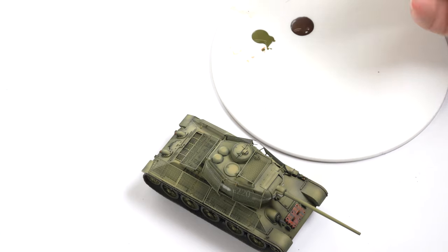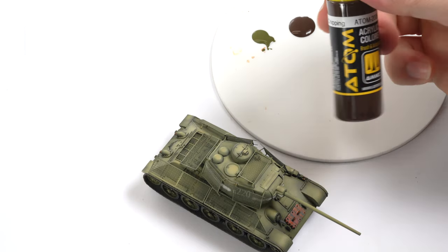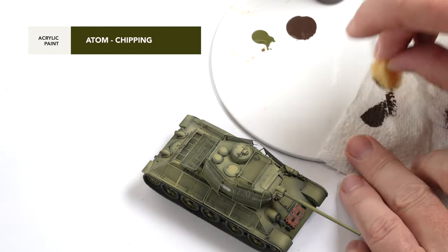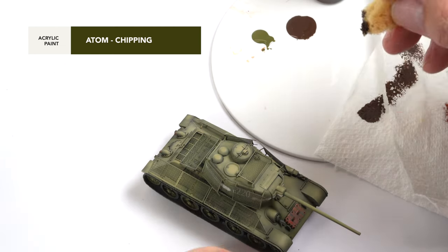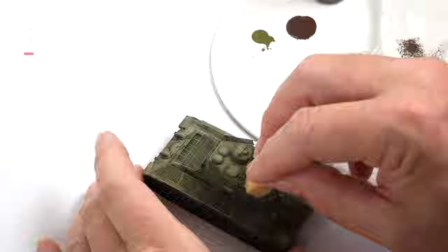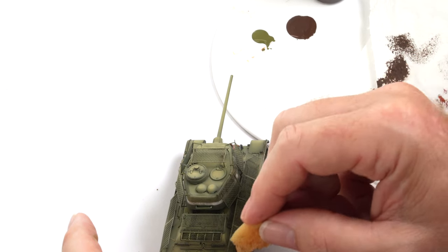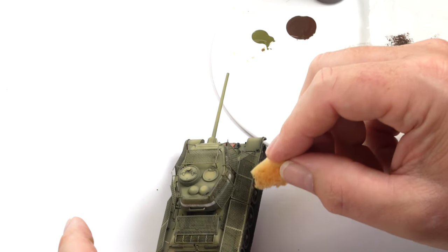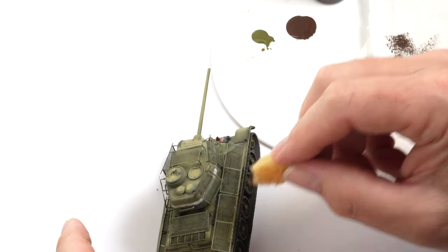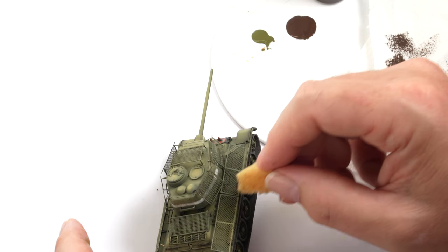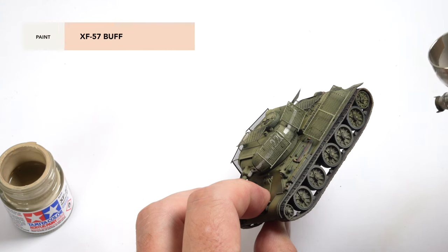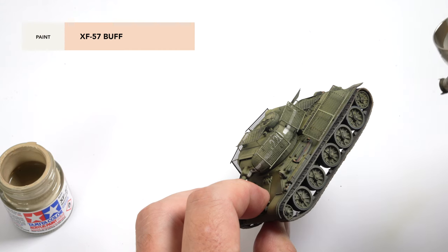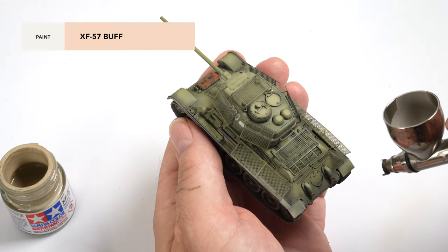Chipping is a color in the new Atom range and was sparingly applied to the screens using a sponging technique. Given the small scale it's important to remove just about all of the paint from the sponge prior to dabbing it against the parts. The chip should be extremely fine and almost impossible to detect with a naked eye at a model of this scale. Back to the buff and a dusted layer is lightly sprayed to the lower edges of the model.